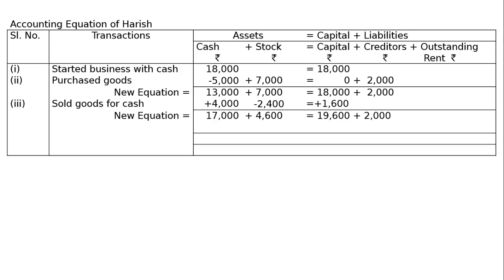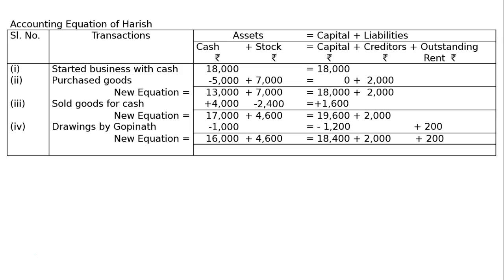Fourth transaction: rent paid ₹1,000, rent outstanding ₹200, so total rent expenditure is ₹1,200, deducted from capital. Cash is reduced by ₹1,000 and capital is reduced by ₹1,200, while outstanding rent liability increases by ₹200. The final equation is: cash ₹16,000 + stock ₹4,600 = ₹20,600 on the asset side; capital ₹18,400 + creditors ₹2,000 + outstanding rent ₹200 = ₹20,600 on the liabilities side. Both sides are tallying and this is the final answer.